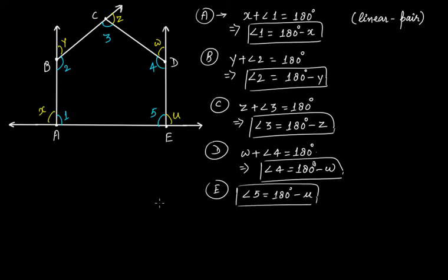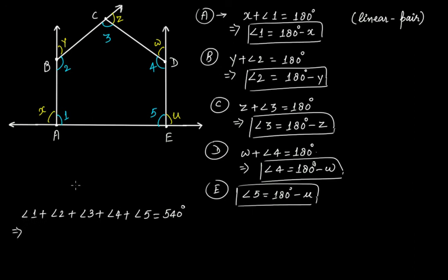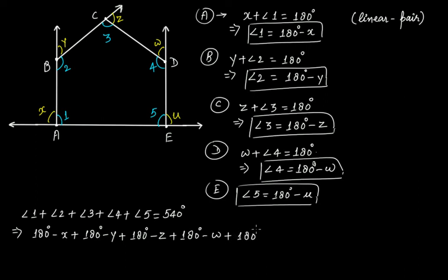Now, the sum of the internal angles of the pentagon is equal to 540 degrees. So, angle 1 plus angle 2 plus angle 3 plus angle 4 plus angle 5 is equal to 540 degrees. Substituting the values: (180 minus X) plus (180 minus Y) plus (180 minus Z) plus (180 minus W) plus (180 minus U) is equal to 540 degrees.